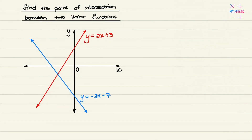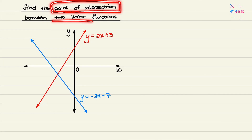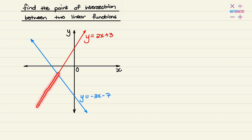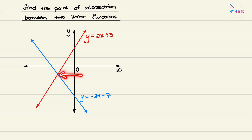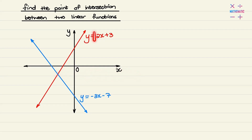In this video we'll find the point of intersection between two linear functions. Here I have the two functions drawn out as a red line and a blue line, and what we are looking for is the point — the coordinates — where these two values meet. This is called the point of intersection, and what happens at this point is the two equations are equal to each other.